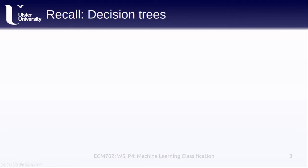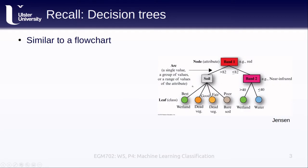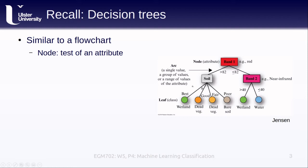Continuing the theme of methods we've seen before, I'm going to use the next few slides to refresh your memory on different machine learning techniques, starting with decision trees. Recall that a decision tree is similar to a flowchart — we have input data and a series of steps to follow to determine what to classify that input data as. We have nodes in our decision tree where we test different attributes. For example, here we have a node where we're looking at the value in band 1, which might be the red band, and we're classifying our data into two different groups based on whether the pixel values are bright or dark in the red band. After that, we move on to our next set of nodes until we get to our final classification layer, where each pixel value has been assigned to a class.